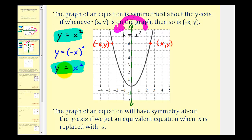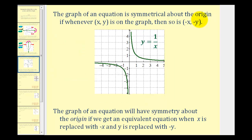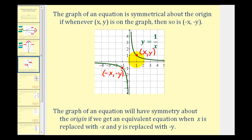The last type of symmetry we want to discuss is symmetry about the origin. The graph of an equation is symmetrical about the origin if whenever the point (x, y) is on the graph, then so is the point (negative x, negative y). Looking at the provided graph, if we labeled this point here with coordinates (x, y), notice how this graph would also contain the point with coordinates (negative x, negative y). This would be true for any two points on this graph because it has symmetry about the origin.